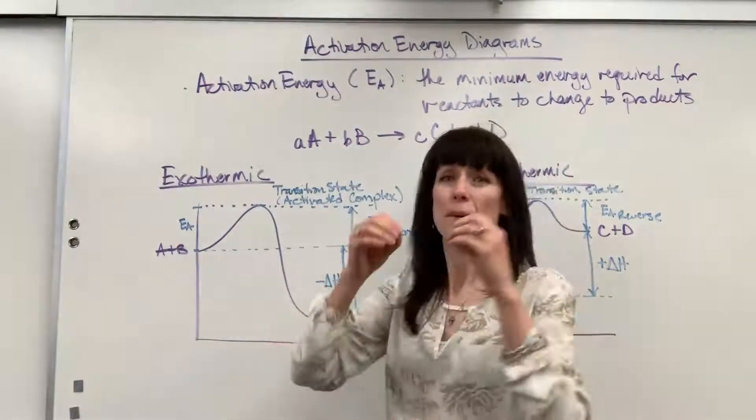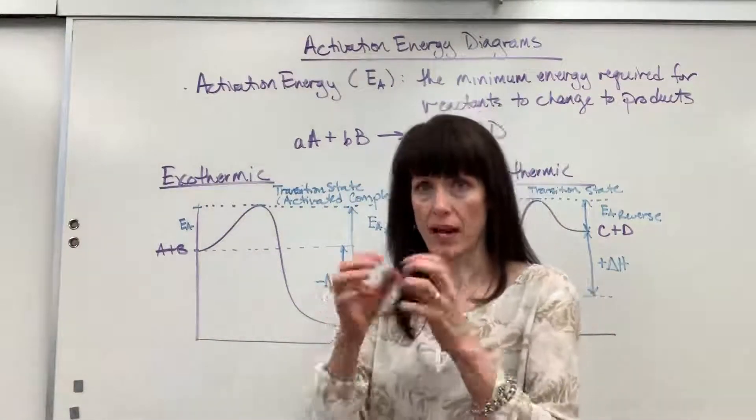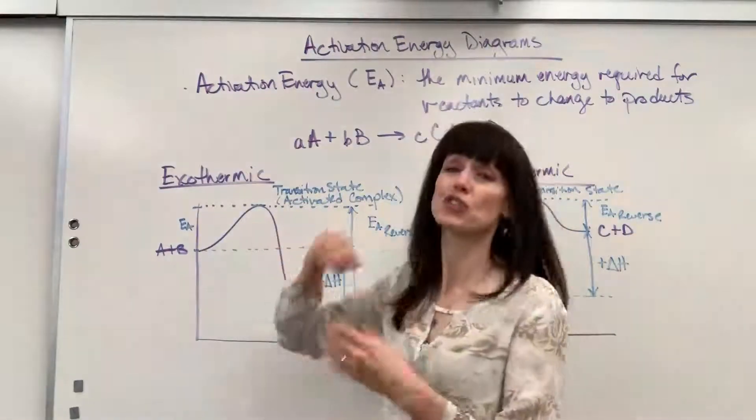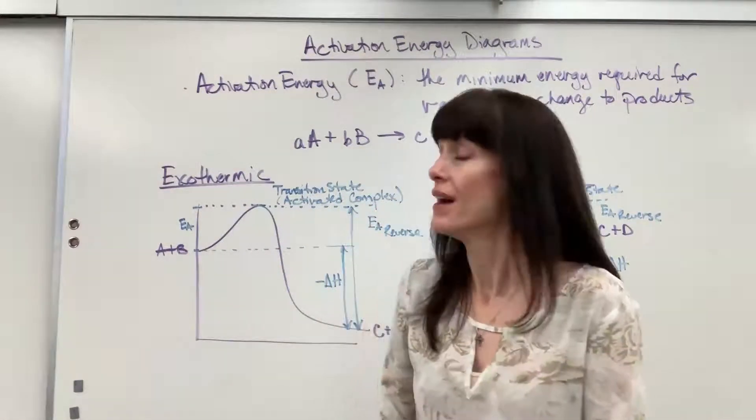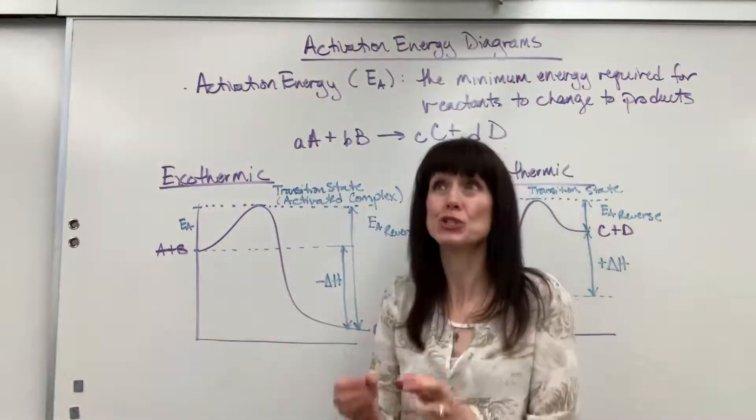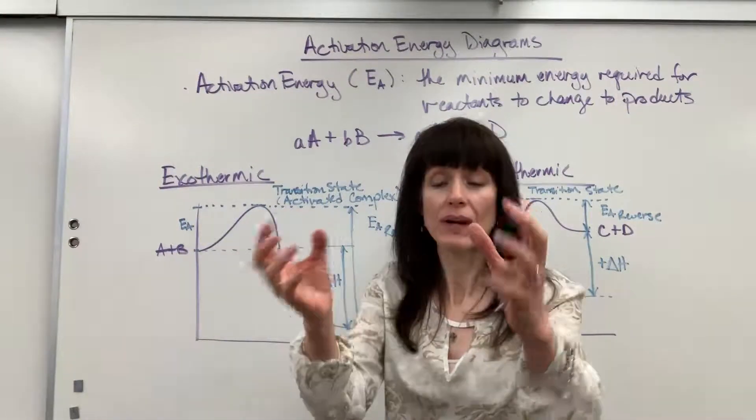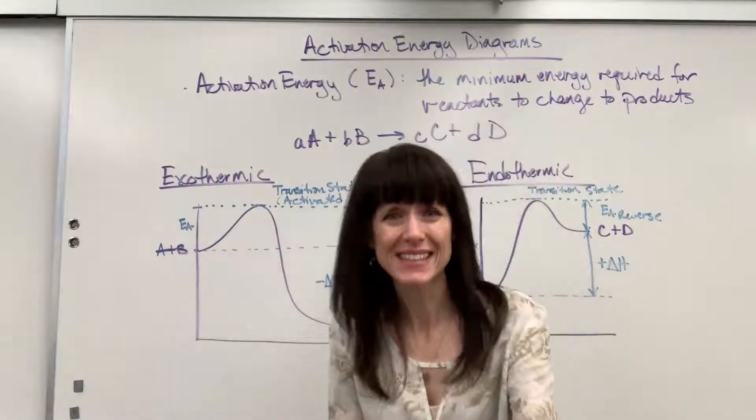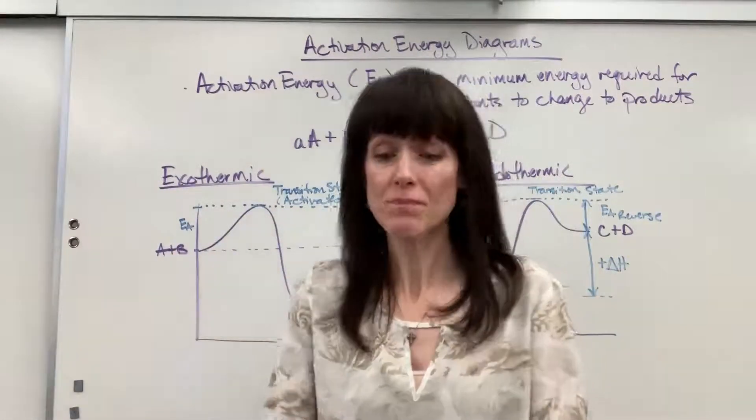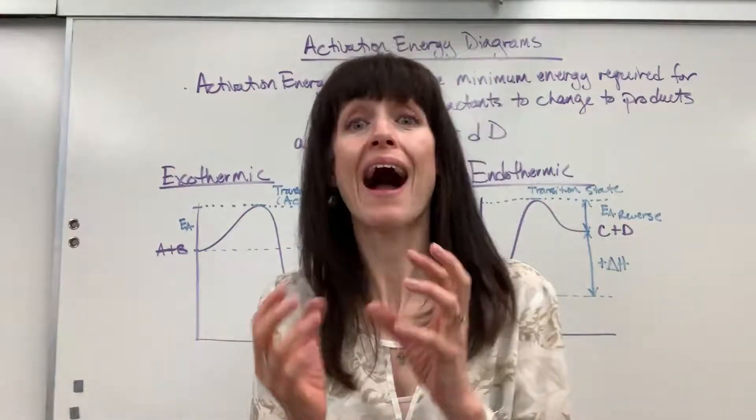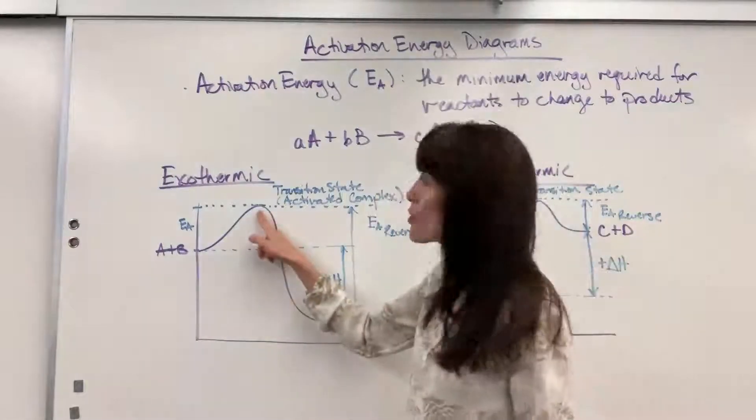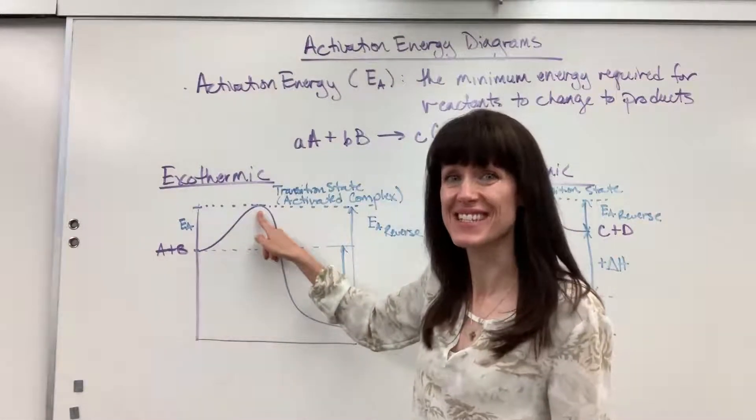This is going to be that moment where reactants break and then bonds form for the products. It is extremely unstable. Here's a true fact: it is so unstable and so crazy fast that we haven't been able to collect significant data at all. We honestly, for everything that we know, we really don't know how bonds break and how bonds form because it happens so fast right there at that transition state.